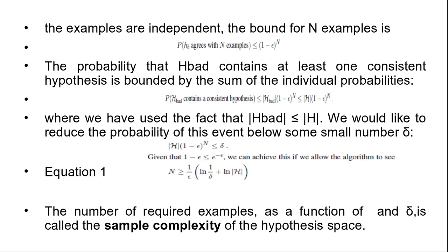The probability that H bad contains at least one consistent hypothesis is bounded by the sum of the individual probabilities. Here, probability that H bad contains a consistent hypothesis is less than or equal to mode of H bad times 1 minus epsilon to the power N, which is less than or equal to mode H times 1 minus epsilon to the power N, where we have used the fact that mode of H bad is less than or equal to mode H.